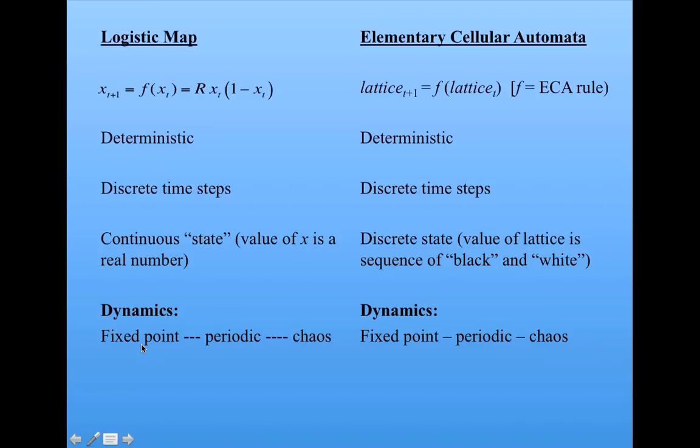The dynamics of the logistic map we saw went from fixed point to periodic to chaos. We saw all those kinds of dynamics. Similarly, in cellular automata, especially here the elementary cellular automata, we saw those same kinds of dynamics: fixed point, periodic, and chaos.